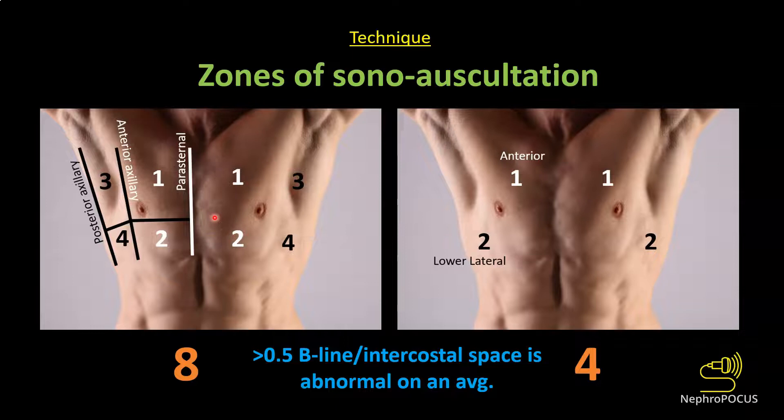In general, a presence of more than 0.5 B lines per intercostal space on average is considered abnormal. Across eight zones you take the average number of B lines, and if it is more than 0.5 that is considered significant.